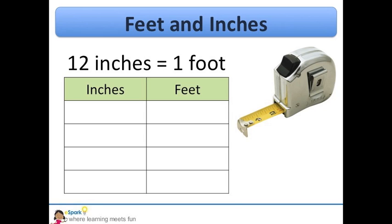I set up a two column table with inches in one column and feet in the other. Since I know that there are 12 inches in one foot, I know that there are 24 inches in two feet because 12 times two is 24.